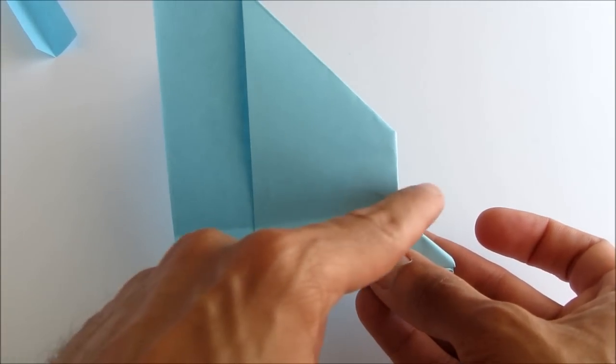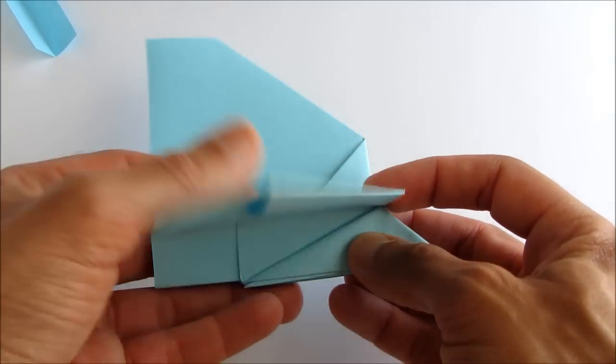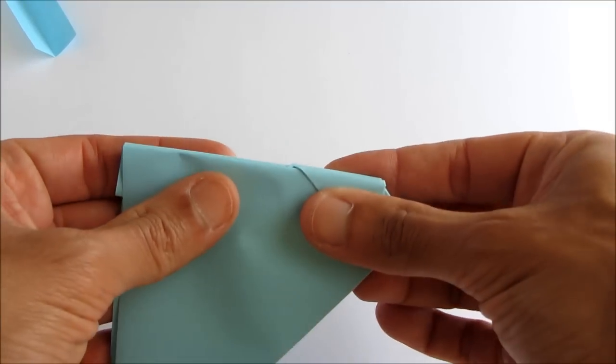So the back of the wing will be two to three millimeters lower than the front. So repeat this fold for the other wing.